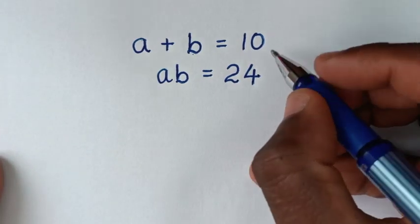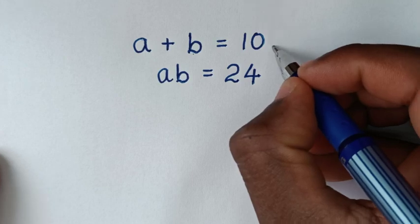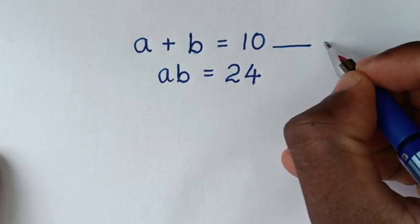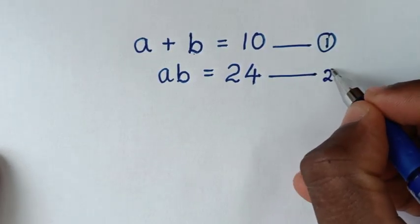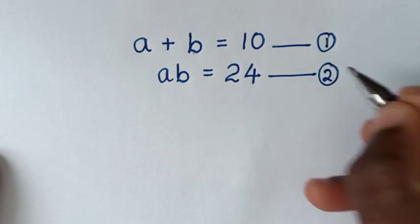Now, in the first step, we'll start by letting a plus b equals 10 as equation 1, and a times b equals 24 as equation 2.